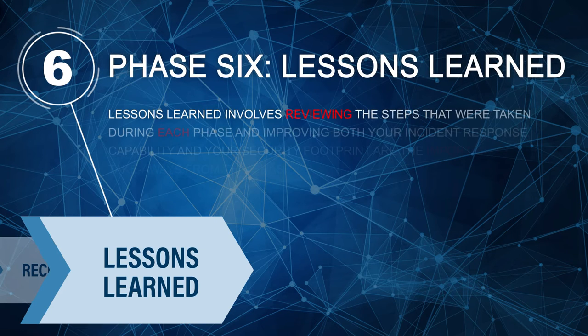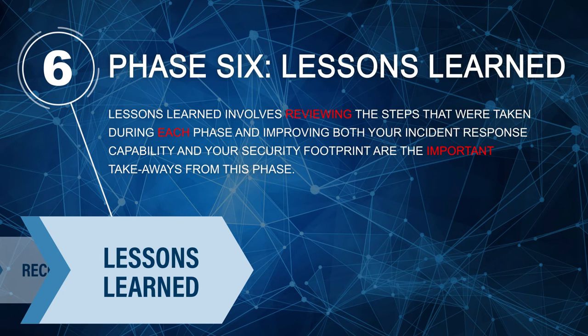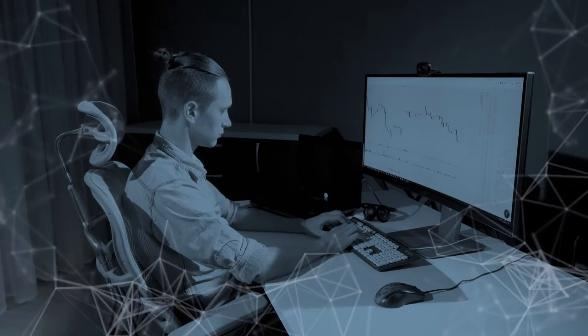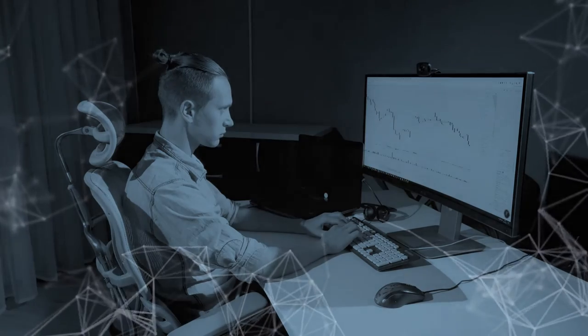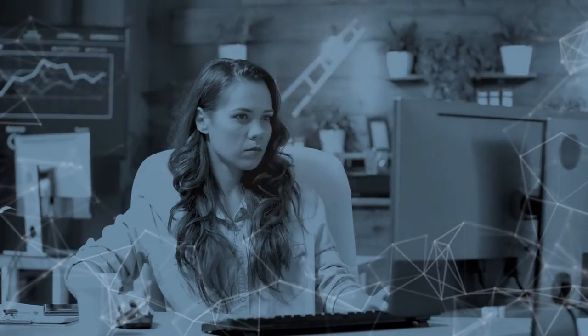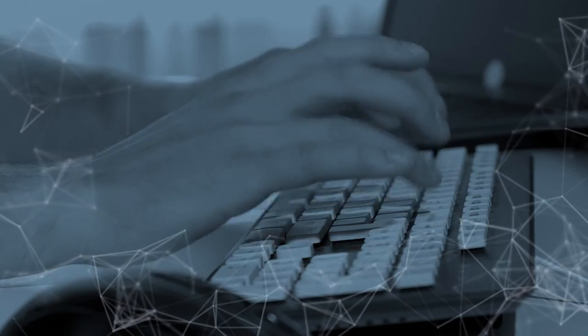The last phase — lessons learned — is one that many organizations skip, but it's arguably the most important to prevent future incidents. Lessons learned involves reviewing the steps taken during each phase and improving both your incident response capability and your security footprint. If you rush to get back up and running but never stop to consider the implications of what caused the security incident — whether it was human error, security holes, or a flaw in a security product — your organization should review what went wrong and use the incident as a stepping stone to work towards a solution. Without this stage, you may find yourself running back through these steps again and again with every subsequent preventable incident.